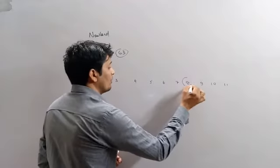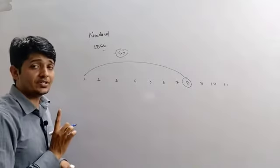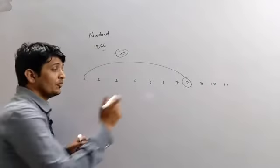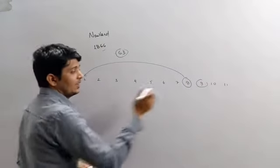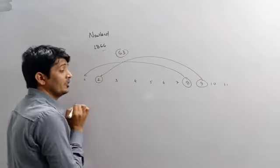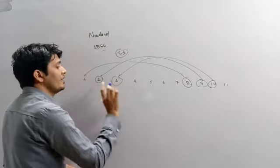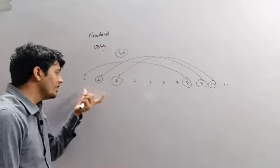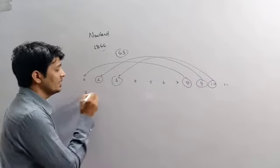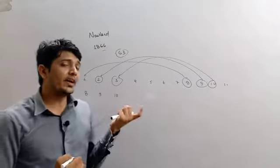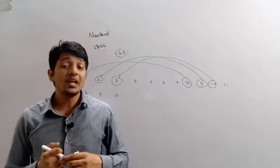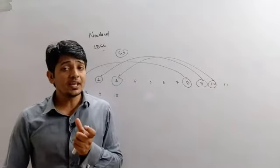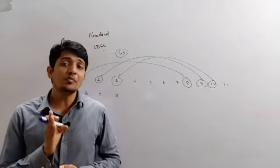And during the arrangement, he found that the property of every eighth element was similar to that of first. So the property of 9th element will be similar to 2nd, and 10th will be similar to 3rd, and so on. And this sequence continued. So then he arranged it so that the 8th element will come below 1st, 9th element will come below 2nd, and 10th element will come below 3rd. So likewise he arranged all the known elements of that time and found that the properties of every 8th element was similar to that of first.